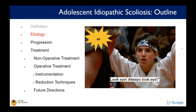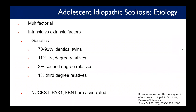Number five on the movie list is The Karate Kid — Daniel always taught us to stand up to bullies. In terms of etiology, it's multifactorial. Genetics has been studied quite a bit: in identical twins there's about 73–92% prevalence, and in first- and second-degree relatives the rates are 11% and 2% respectively, with 1% in third-degree relatives. Various genetic markers associated with AIS have also been identified.